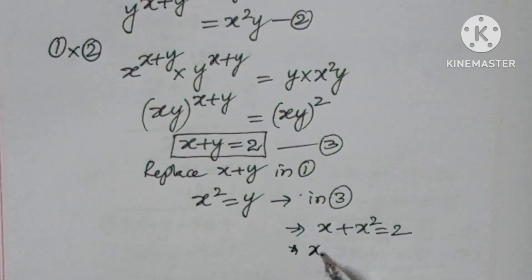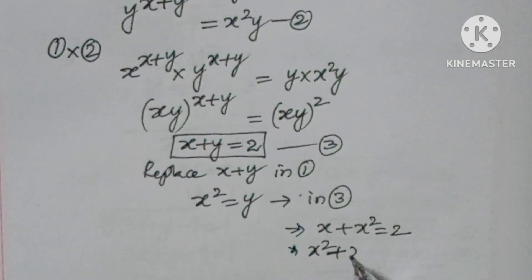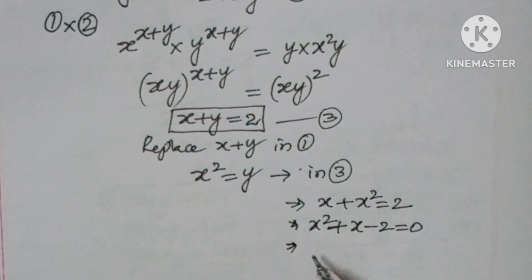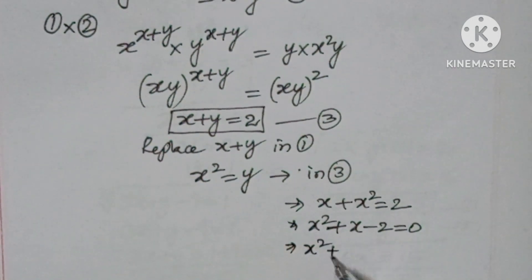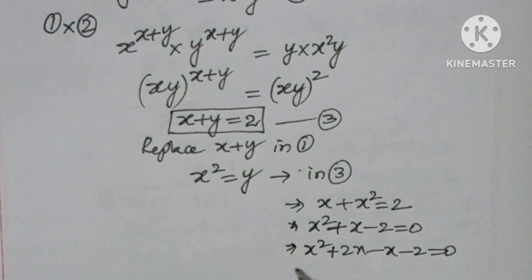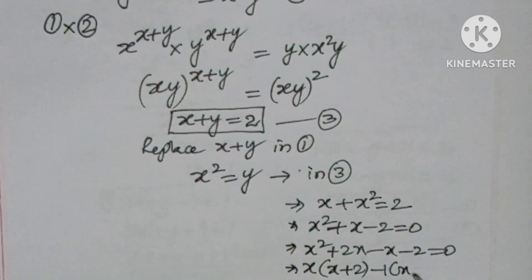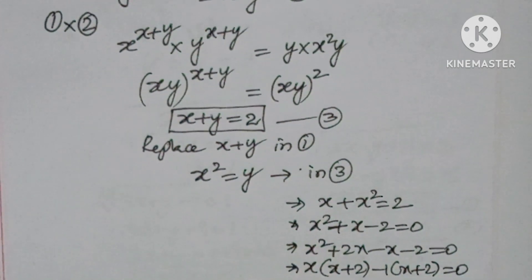That implies x squared plus x minus 2 equals 0. So here you can write the factors: x squared plus 2x minus x minus 2 equals 0. So x times x plus 2 minus 1 times x plus 2 equals 0.